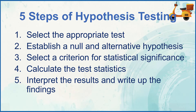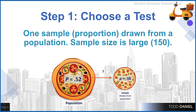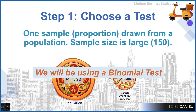We begin with step one: select the appropriate test. We have a single sample, and all of the responses are yes and no, meaning you had to answer one or the other. You couldn't answer both, and if you answered neither, you weren't included in the sample. This gives us a setup for a binomial outcome. Because the answers are yes and no, we can divide the total yes by the total number in the sample, 150, to calculate a proportion. Therefore, we have a sample proportion of 0.58 drawn from a population of 0.52. We will use a binomial test to determine whether the difference represents random chance or statistical significance.